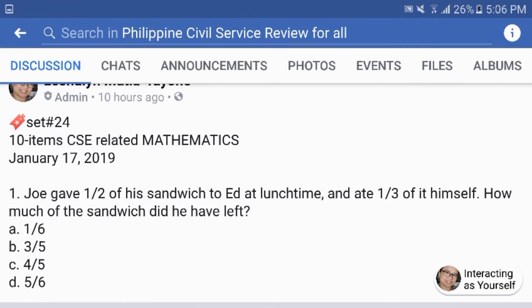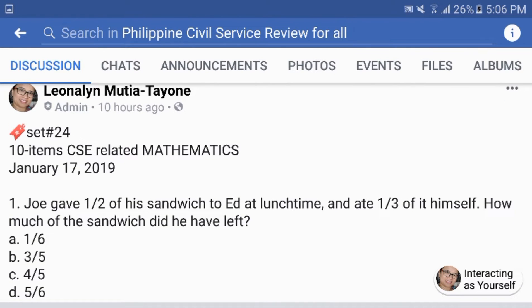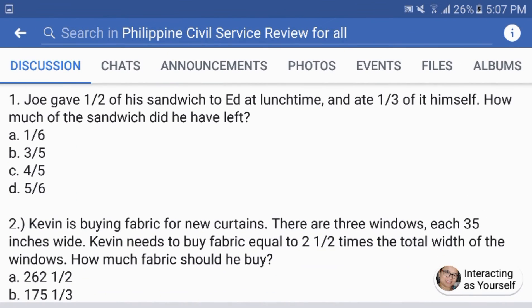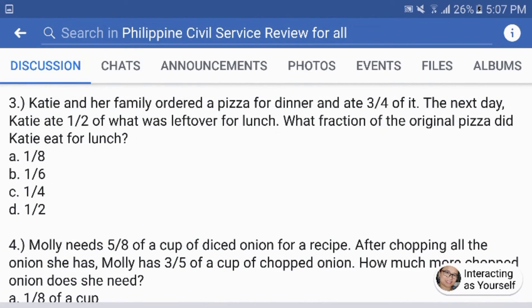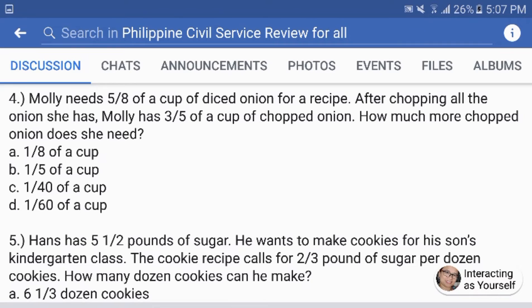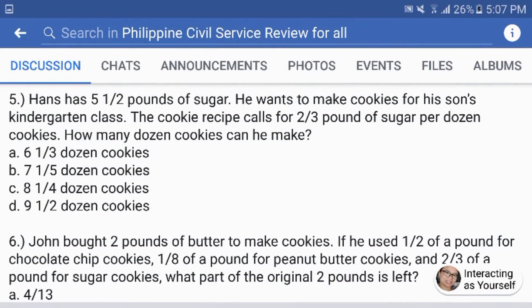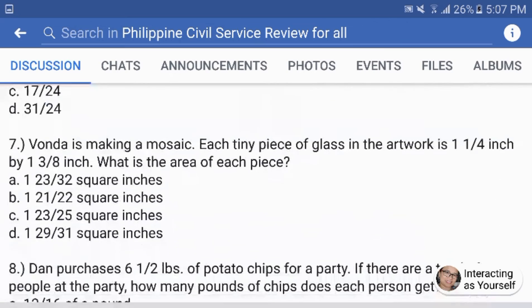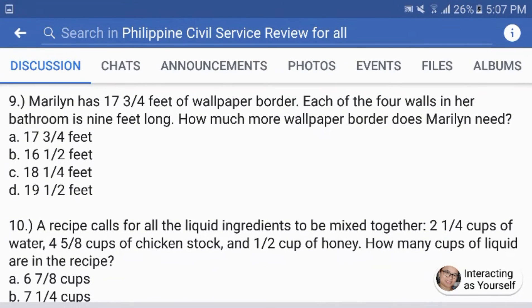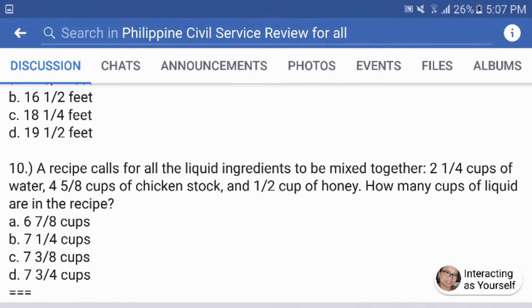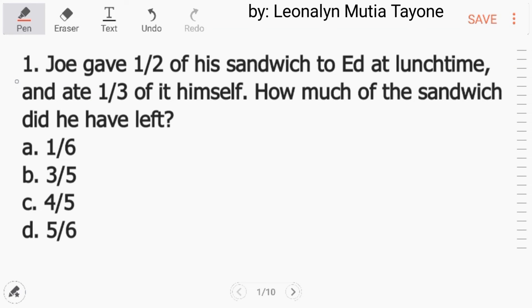Set number 24 for our 10 items says E-related mathematics. Number 1. Joe gave one-half of his sandwich to Ed at lunchtime and ate one-third of it himself. How much of the sandwich did he have left?